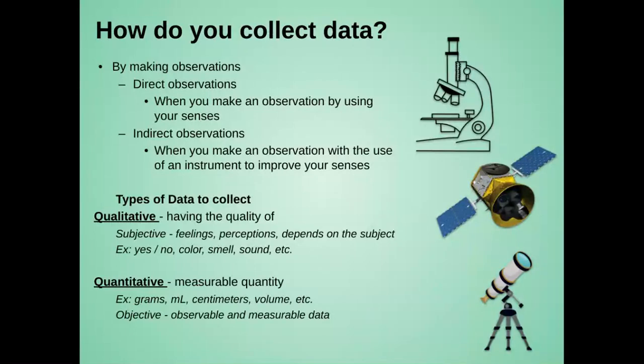The different types of data that we can collect are qualitative and quantitative. If it's qualitative data, that means that it has the quality of. It's very subjective, meaning your feelings, your perceptions, and it depends on the subject. For example, yeses, noes, the color change, smells, sounds. Did you like this? Yes or no.